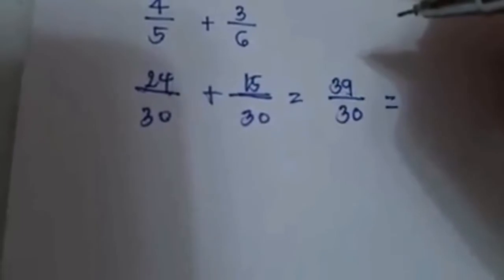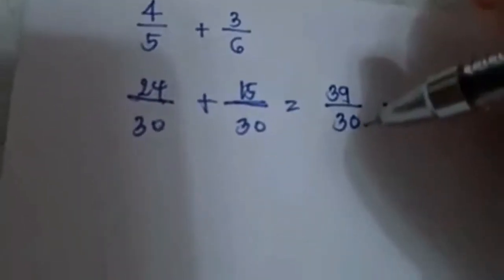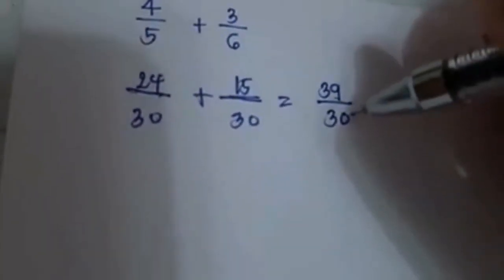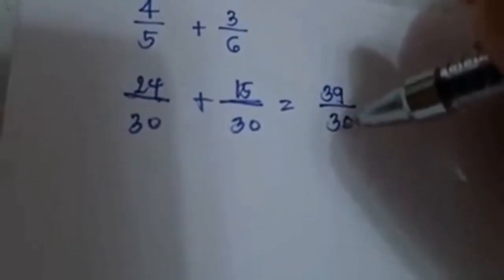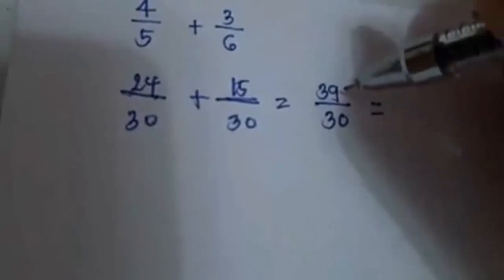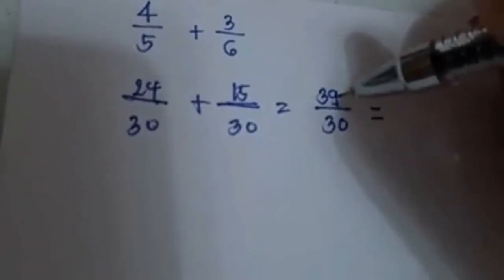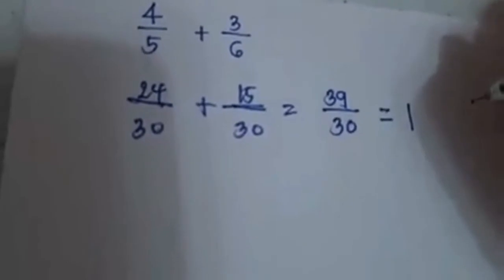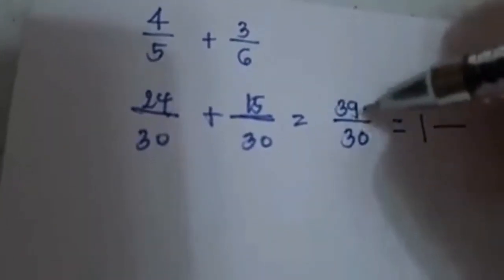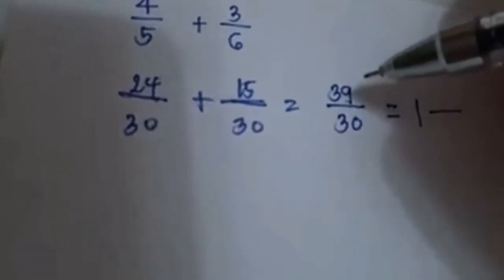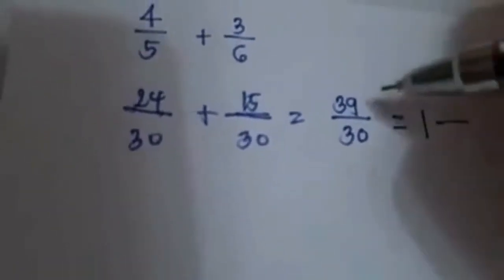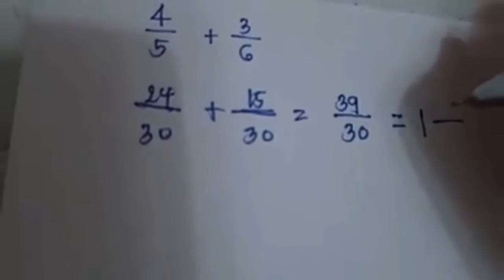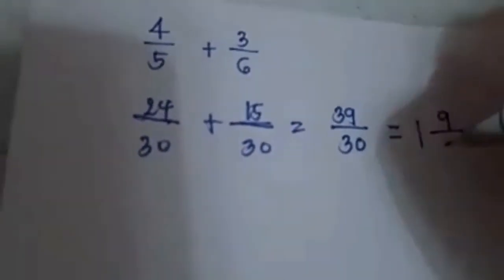When you get an improper fraction as your sum or difference, you have to convert it into a mixed number. How many 30s can you get from 39? There is only one 30, so 1 will be your whole number. What is left from 39 after you take away 30 will be your numerator. 39 minus 30 is 9, so your numerator is 9. Then copy the denominator.